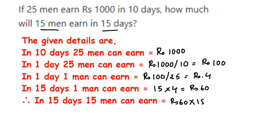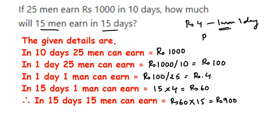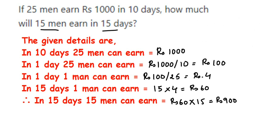Alternatively, since we got rupees 4 for one man per day, you can first find out for 15 men — that is 4 multiplied by 15 — and then multiply by 15 days. Either way, you'll get the same answer of rupees 900, whether you calculate for 15 men first or 15 days first.